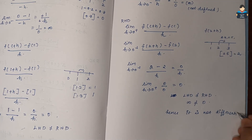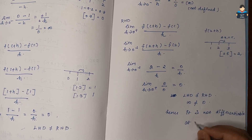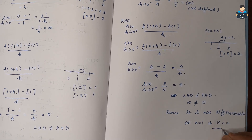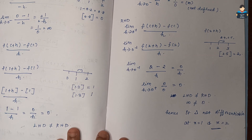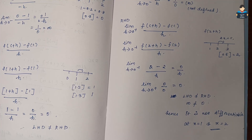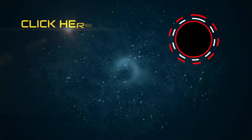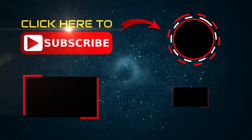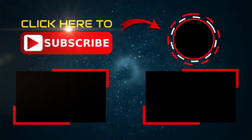Hence the greatest integer function is not differentiable at x = 1 and x = 2. This completes the video. The next video will cover the next exercise. Please like, share, and subscribe. Thank you.